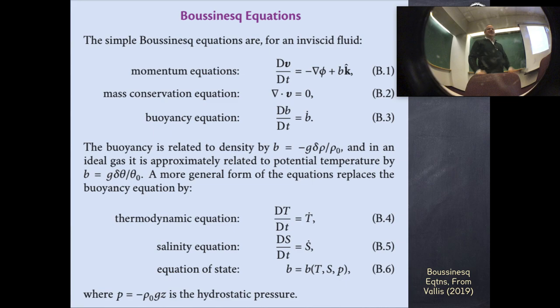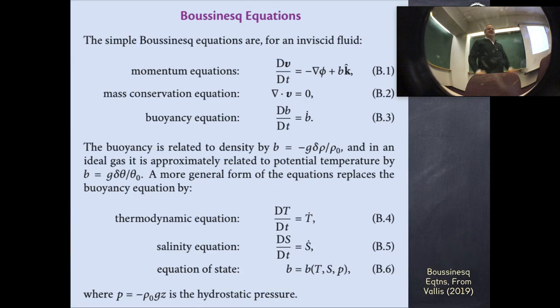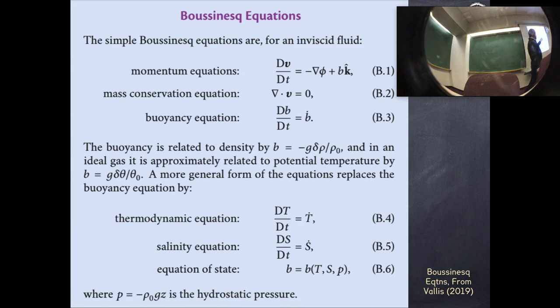Going from the full equations to Boussinesq, the mass continuity equation becomes incompressibility, and the pressure simplifies so that buoyancy just appears in the vertical momentum equation. We no longer think about real density compressibility — something less dense is simply buoyant, popping to the surface or sinking without filling more or less volume. We can write a thermodynamic equation for buoyancy, or express it via temperature and salinity.